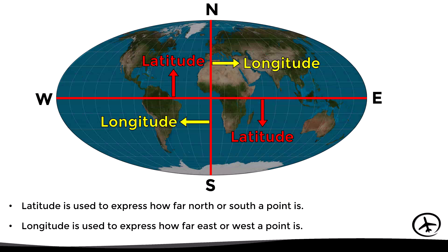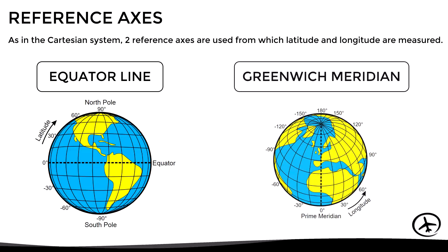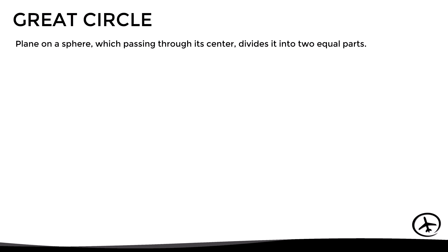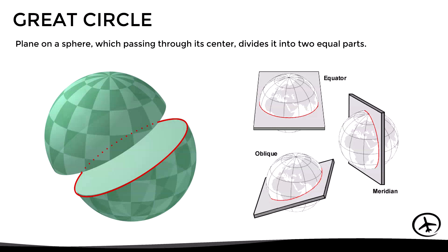As in the Cartesian system, two reference axes are used from which latitude and longitude are measured — these are the equator line and the Greenwich meridian. To understand how these reference axes are defined, we first need to look at the definition of a great circle and a small circle. A great circle is a plane on a sphere which passes through its center and therefore divides it into two equal parts. We can divide the earth in any direction, as long as it is divided into two equal parts, to obtain a great circle.